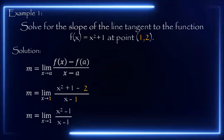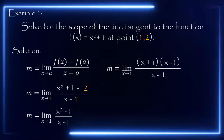We will factor the numerator x squared minus 1. The factors are (x + 1)(x − 1), all over x minus 1, as x approaches 1. We can cancel out x minus 1 from both numerator and denominator, leaving x plus 1 as our new function. Taking the limit using x = 1, we get 1 plus 1, so the slope of the line tangent to the function is 2.